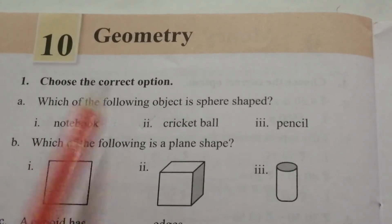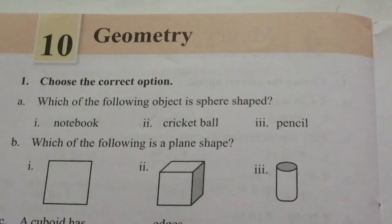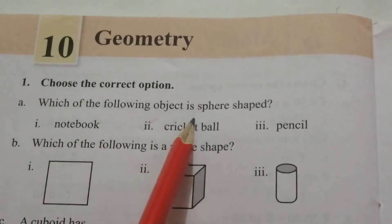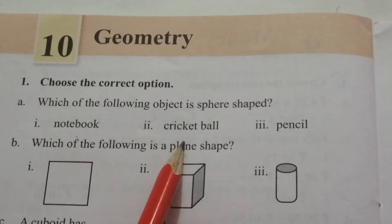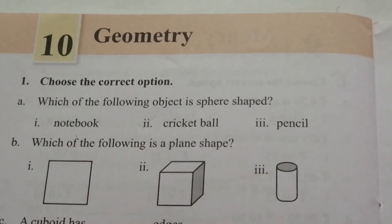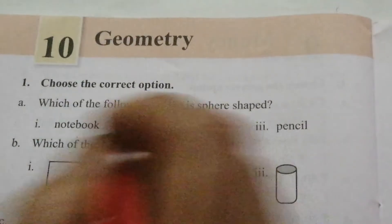1. Choose the correct option. A. Which of the following object is sphere shaped? Notebook, cricket ball, pencil. The answer is cricket ball.